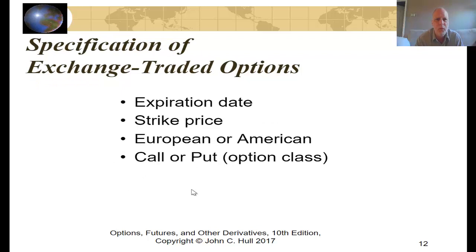The specifications of exchange-traded options include: the expiration date — similar to insurance, you can buy options for six months or a year; the strike price, which is the price at which you get to buy or sell; whether the option is European, exercisable only on the expiration date, or American, exercisable any time up to expiration; and the option class — whether it is a call, giving you the right to buy, or a put, giving you the right to sell.